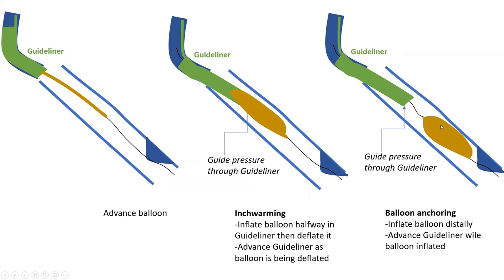You can even get the guideliner across the lesion fully, then take that balloon out, position a stent inside the guideliner, pull back the guideliner as if you're unsheathing the stent, and deploy it. Another technique I've found more effective than inch worming in some cases is balloon anchoring: you inflate the balloon in the vessel, and as the inflated balloon grabs the wire and the whole wire-catheter system, you advance the guideliner. Keep in mind there is more risk of vessel injury with these techniques, so you have to be experienced and careful.